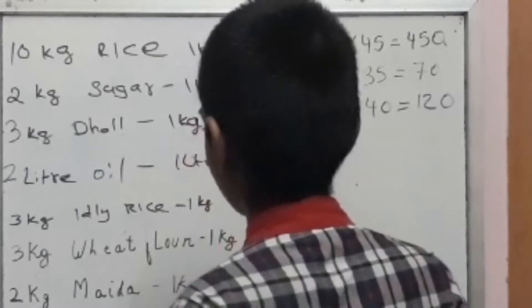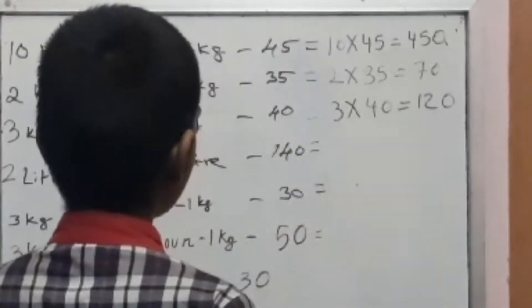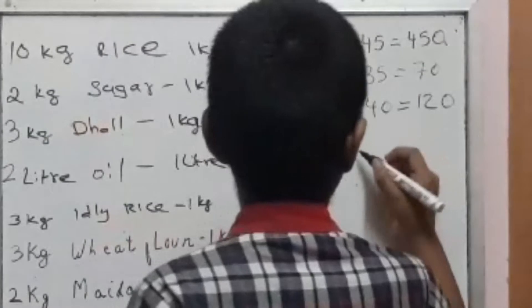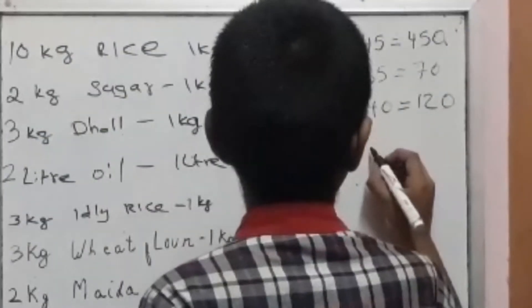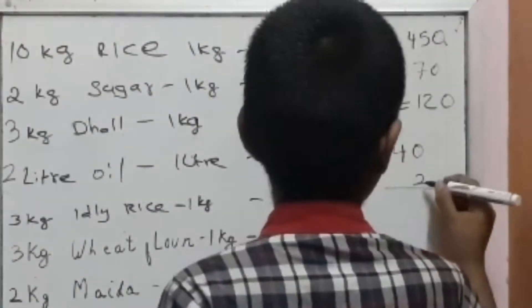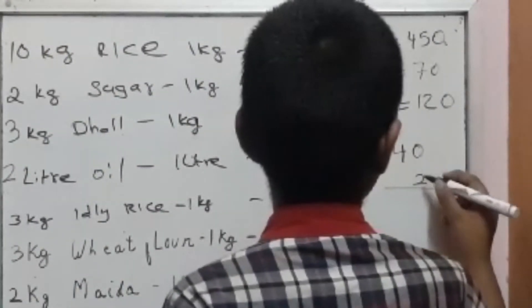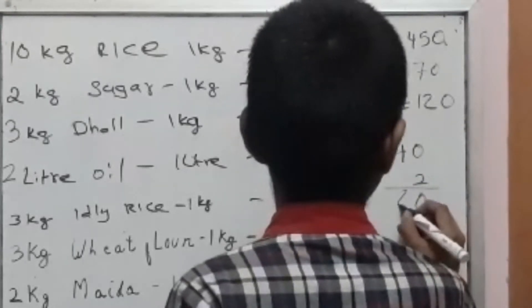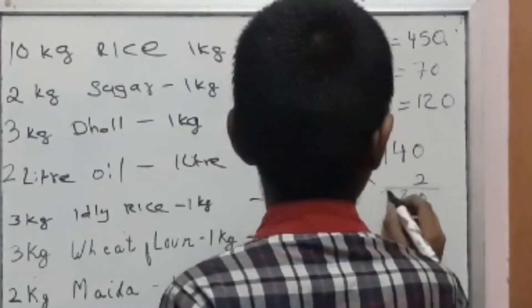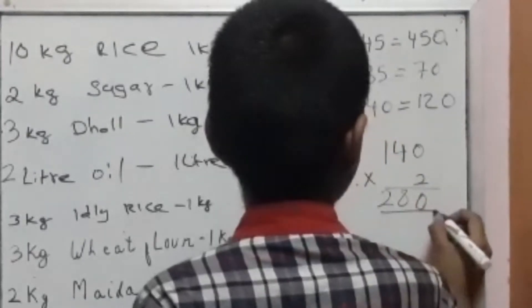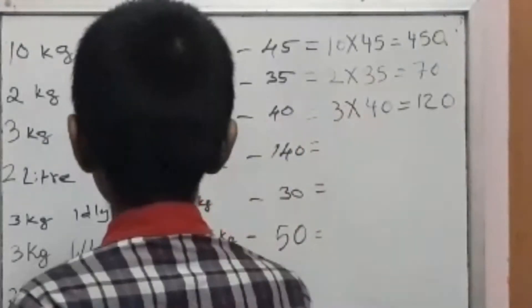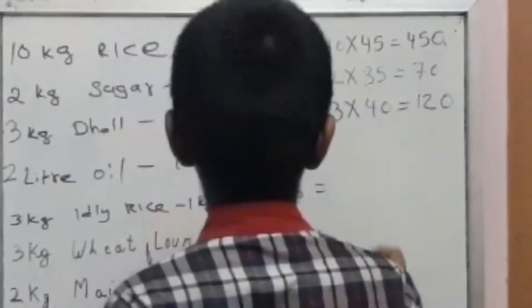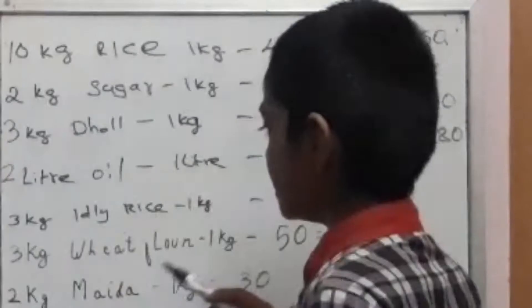2 litre coconut oil. 1 litre equal to 140. So we have to multiply. 2 into 0 is 0. 2 fours are 8. 2 ones are 2. The answer is 280. 2 litre of coconut oil is 280.